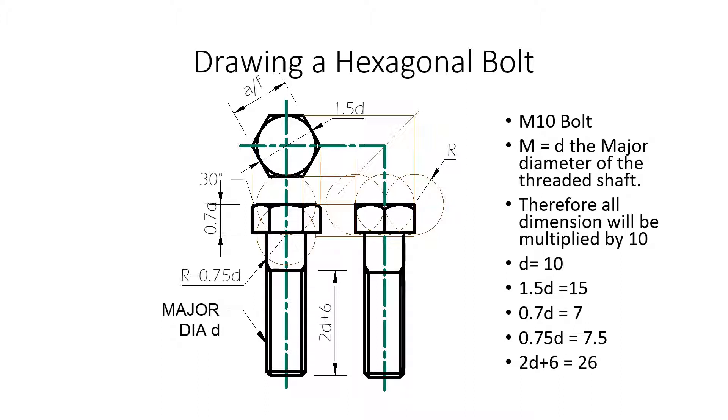And the same thing for the distance across flat, 1.5 by 10, that is going to be 15 millimeters. All these dimensions here must be multiplied by whatever this major diameter of the bolt is.